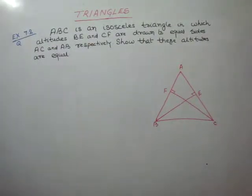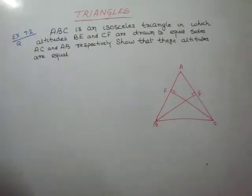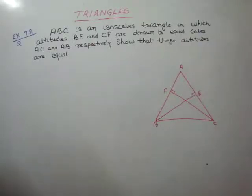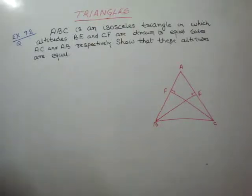ABC is an isosceles triangle in which altitudes BE and CF are drawn to equal sides AC and AB respectively. Show that these altitudes are equal.